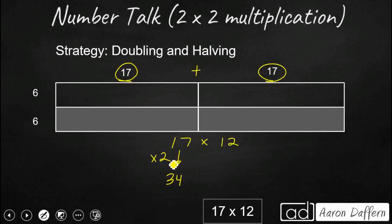In order to keep a balanced expression, though, I'm going to need to then take my other factor, and I'm going to need to cut it in half. So that's why instead of 12, I've got 6. So you double one, you have the other, and you still have a balanced expression.